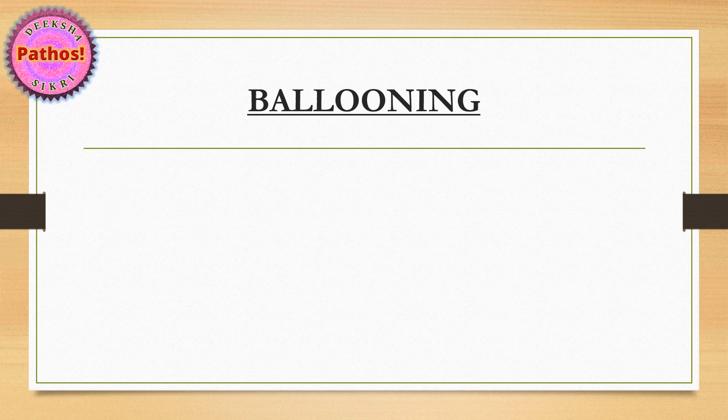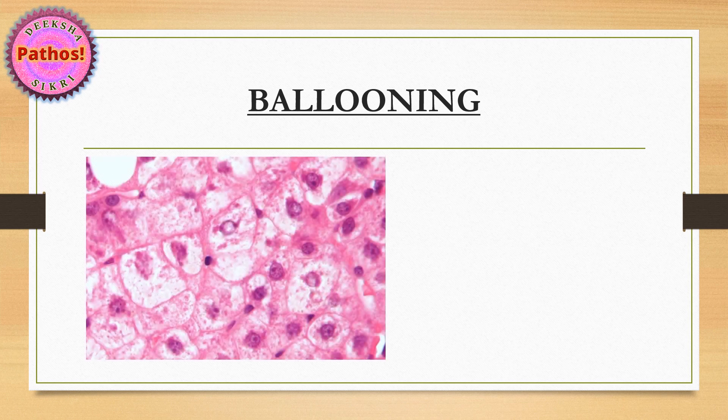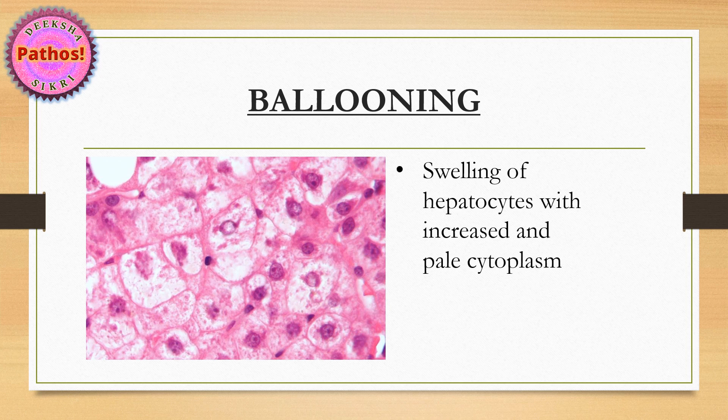The first term is ballooning. I'm sure most of you have heard this in terms of hepatocytes, and that's where this term has been described classically — ballooning degeneration. Look at these hepatocytes; they look swollen and the cytoplasm seems to be just coming apart. This is due to swelling of hepatocytes with increased and pale cytoplasm. It's a very non-specific pattern of cellular swelling, and over time this could lead to breakdown of the cytoskeletal proteins, especially CK8 and 18, giving you what we call a Mallory-Denk body. It's a pattern of injury seen in hepatocytes, very classically described with acute viral hepatitis.